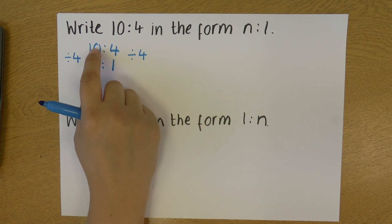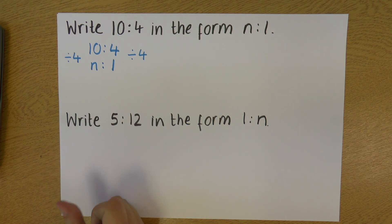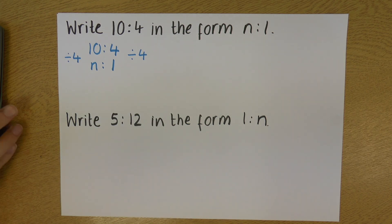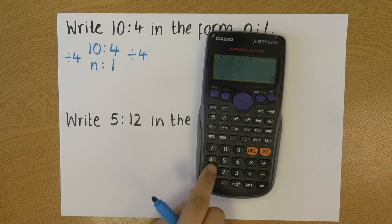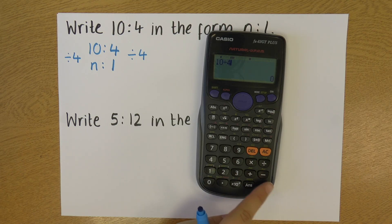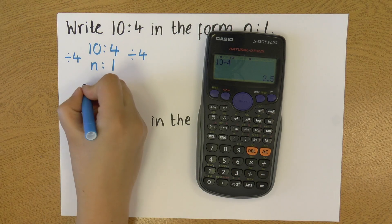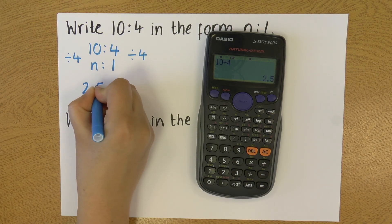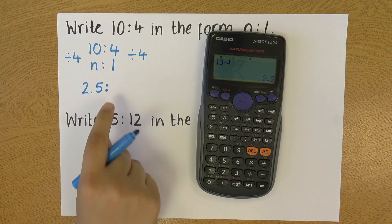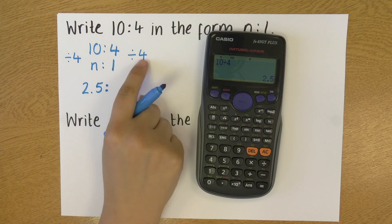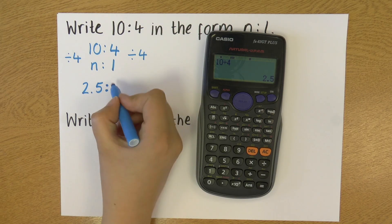On the left, I'm doing 10 divided by 4. I can do this in a calculator if I like. 10 divided by 4 is 2.5. And then on the right hand side, I'm doing 4 divided by 4, which I know is 1.